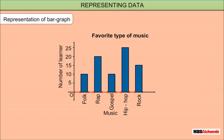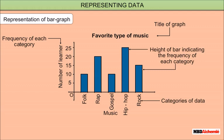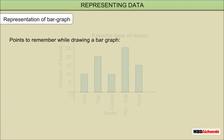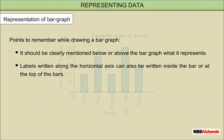The distance between two consecutive bars should be uniform. In a bar graph, the title of the graph is clearly labeled, the frequencies of each category are shown, and categories of data are listed. The height of a bar indicates the frequency of each category. Points to remember while drawing a bar graph: it should be clearly mentioned what the graph represents, and labels along the horizontal axis can also be written inside the bar or at the top of the bars.